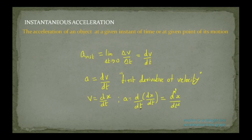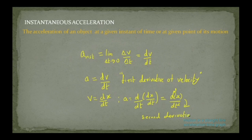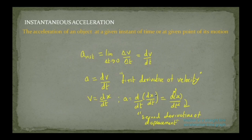Note that dt is one term representing change in time, so we write d²x divided by dt². This is called the second derivative of displacement. So acceleration can be defined in two ways: it is the first derivative of velocity, and it is also the second derivative of displacement with respect to time. This is instantaneous acceleration.